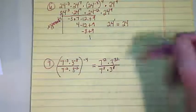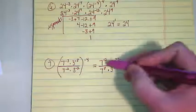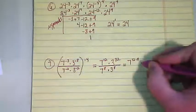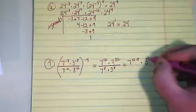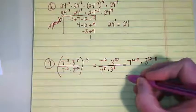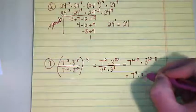As 7 to the 12th minus 8, same base I subtract the one that's in the denominator, times 3 to the 32 minus 8. And I get 7 to the 4th times 3 to the 24th.